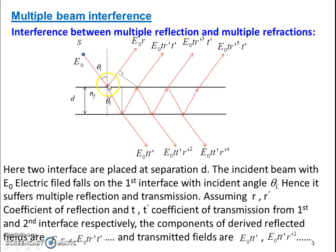then we can estimate the value of the field which is getting reflected from each surface. For example, the first reflected beam will be E0 multiplied with the first reflective coefficient R.